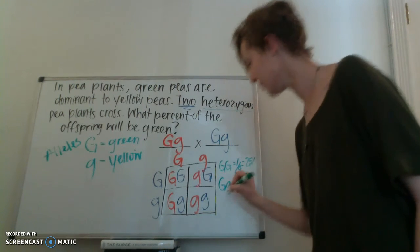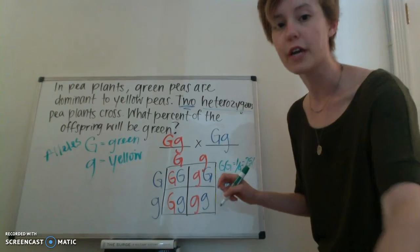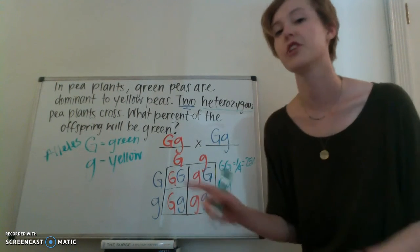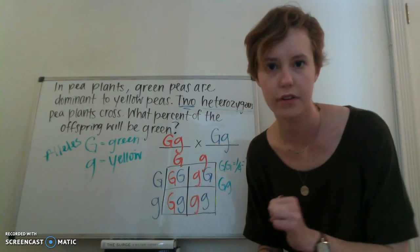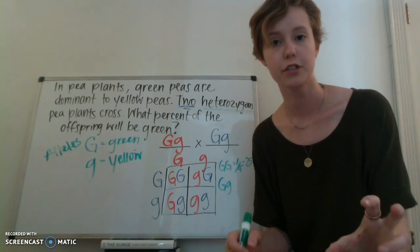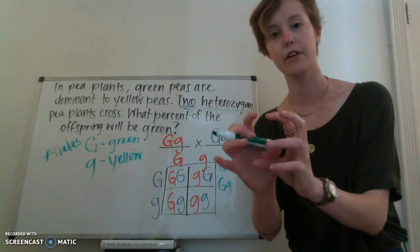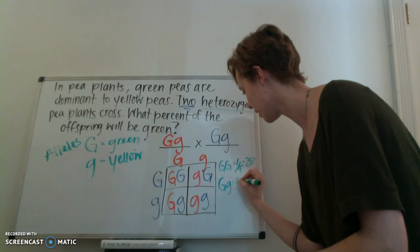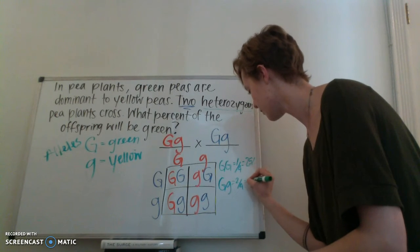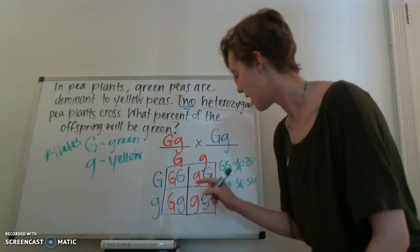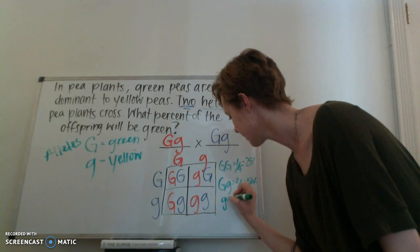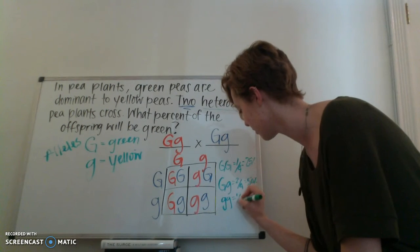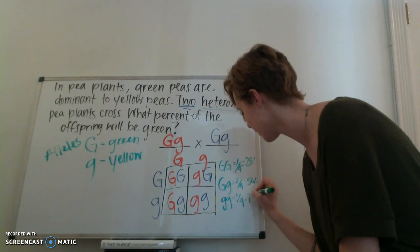For big G, little g, actually, both of these are a big G, little g genotype. It does not matter what order they go in. As long as a big G and a little g are together, they are the same. So we have two out of four. That equals 50%. And then last but not least, little g, little g. One out of my four boxes are little g, little g. That equals 25%.